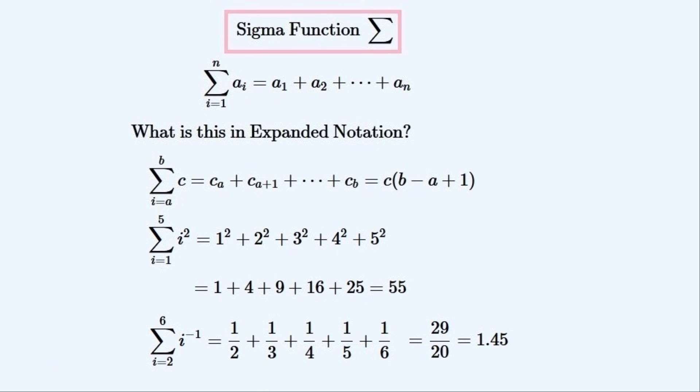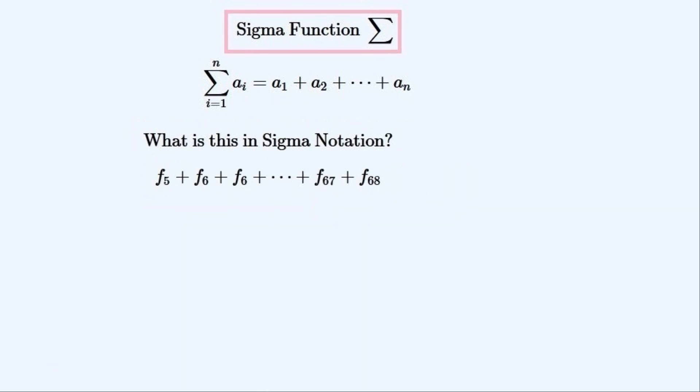And this is what the answer is as a decimal number. Now to find what expressions are in sigma notation from expressions that aren't. What is this dot notation expression in sigma notation? This is what it is in sigma notation. You can see that all of the values of f are summed together from i is equal to 5 to i is equal to 68.